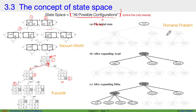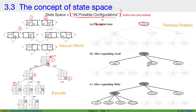Similarly, for the Romania problem, our state space may look something like this. Here's our initial state, where we are at the city of Arad. After expanding Arad — that is, after looking at all the possible states after Arad — we may go to Sibiu, Timisoara, or Zerind. After expanding Sibiu, we will see that there are four possible states we can go to. This is your third state, and so on.